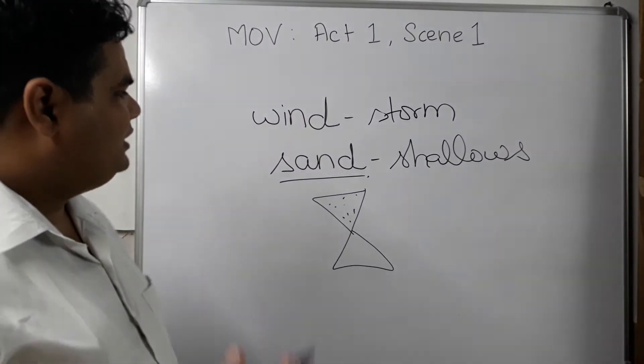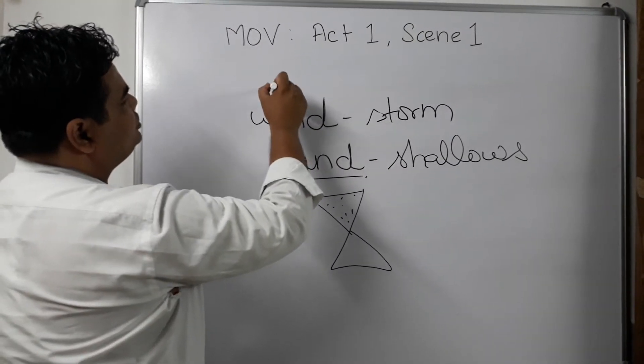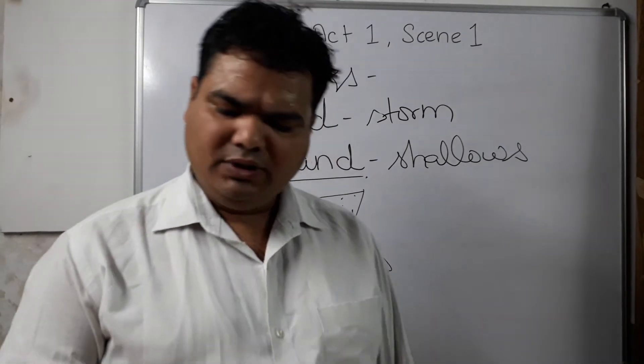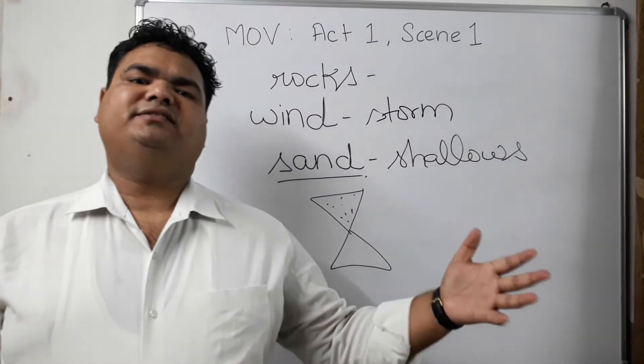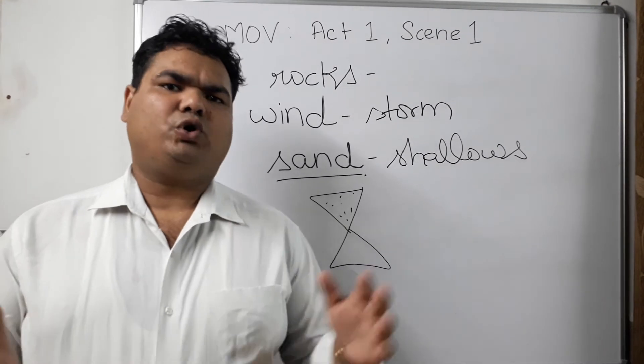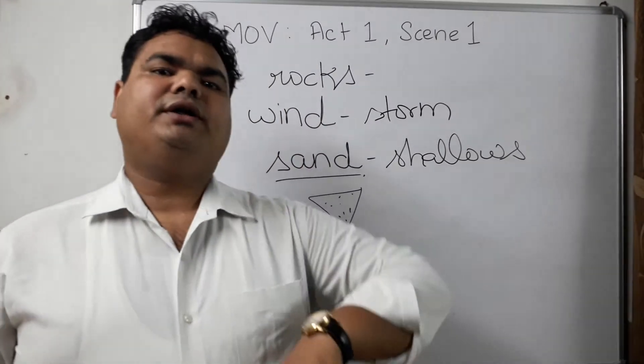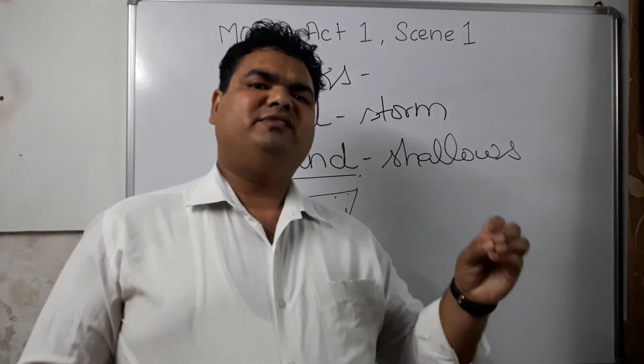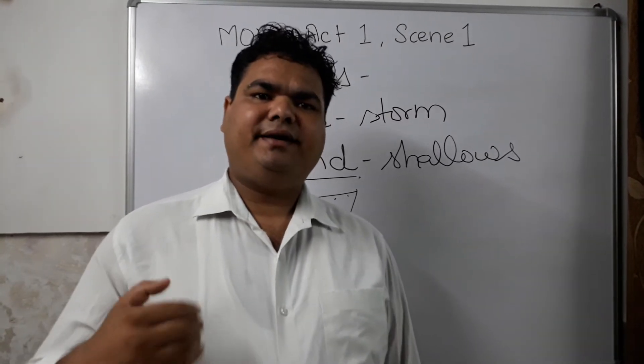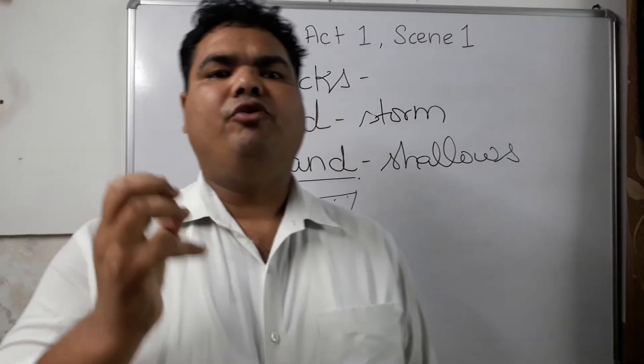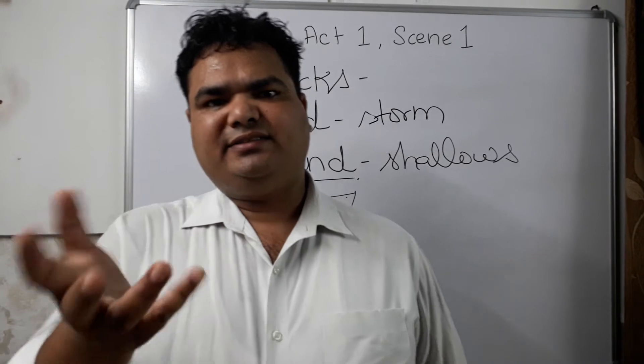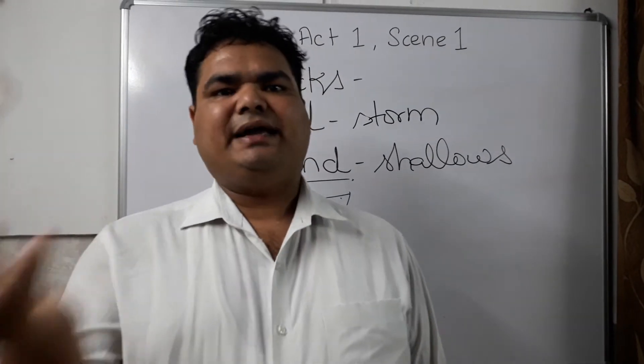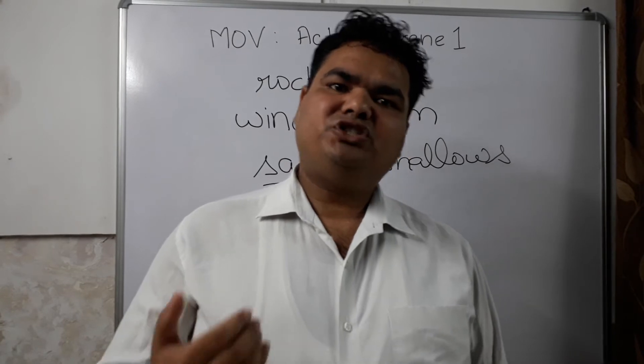The last threat he talks about is rocks. In fact, he talks about sea rocks. There are several rocks or small mountains which are in the ocean. Since we are talking about 16th century when ships were not equipped the way they are now, even if by mistake or just a small accident takes place where the ship gets collided with a rock, the very next moment the ship gets upturned and all the substances scatter all over the stream.